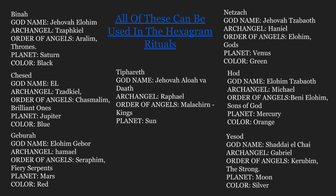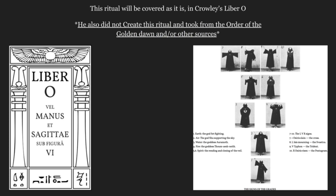The ritual I'm going to explain will be covered as it appears in Crowley's Liber O — which he did not create himself. He took it from the Order of the Golden Dawn, or whatever source they got it from. He did not write these rituals; they came from somewhere long before him. On the side you can see symbols that you will make during ritualistic formulas. Depending on which ritual you're using — the pentagram or hexagram, greater or lesser — you may be doing different things.